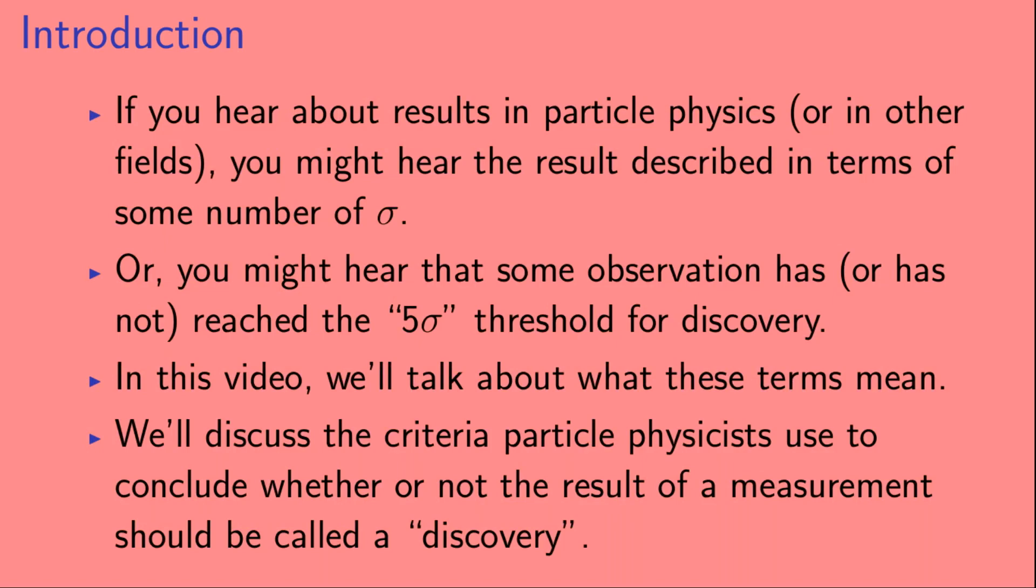If you hear about results in particle physics, or in other fields, you might hear the result described in terms of some number of sigma. Or, you might hear that some observation has, or has not, reached the five sigma threshold for discovery. In this video, we'll talk about what these terms mean. We'll discuss the criteria particle physicists use to conclude whether or not the result of a measurement should be called a discovery.